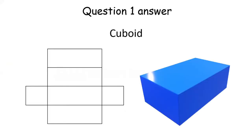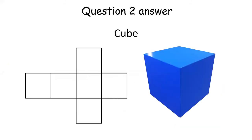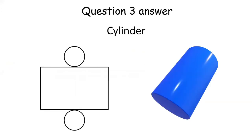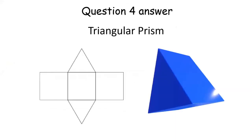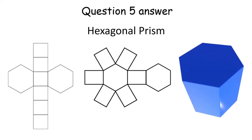Question one: this is a cuboid. Question two: this is a cube. Question three: this is a cylinder. Question four: this is a triangular prism. Question five: this is a hexagonal prism.